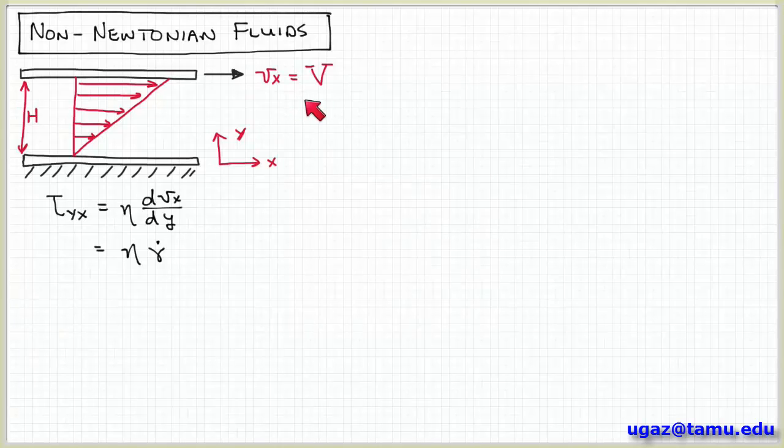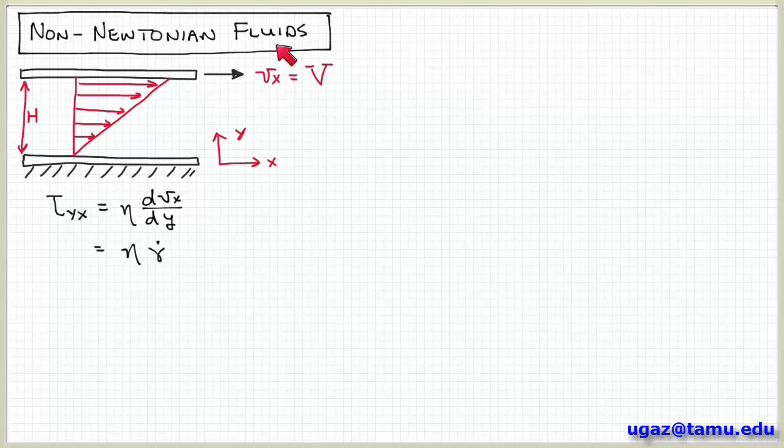Alright, welcome back. We're going to continue here with our discussion of non-Newtonian fluids. I've drawn here the familiar scenario where you have a fluid between two surfaces that are separated by a distance h. The bottom surface is stationary and the top surface is free to move at a constant velocity v.